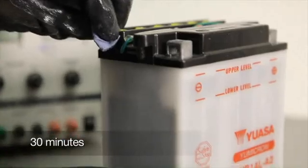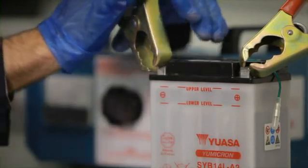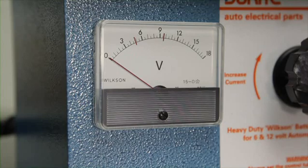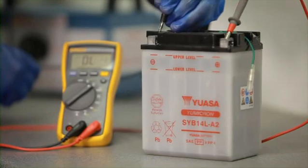Allow the battery to stand for at least 30 minutes, then load test it at three times its ampere hour rating for 15 seconds, or use an automatic battery tester to determine the battery's condition. Then check the voltage. This should be a minimum of 12.4 on a 12 volt battery.